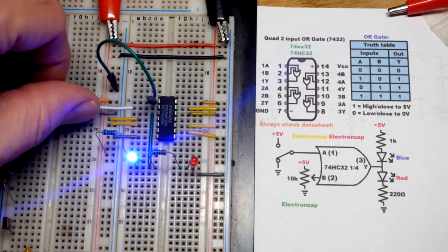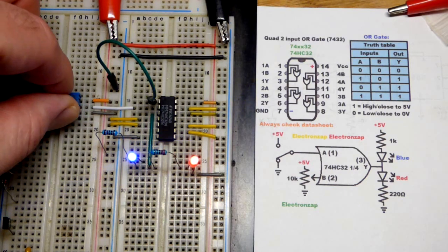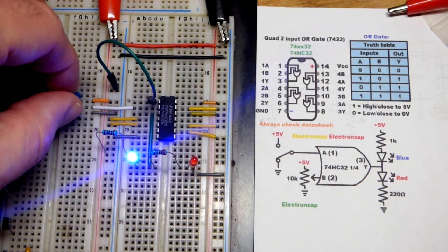We'll go back to both of them being low. If we make the other one high, then the output is high. So even with the trim pot, we set the voltage about halfway. You can see that it's oscillating there.